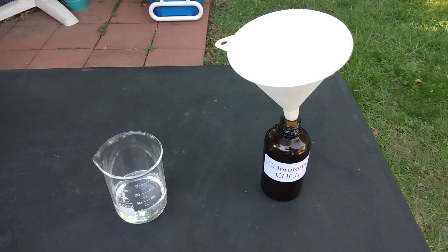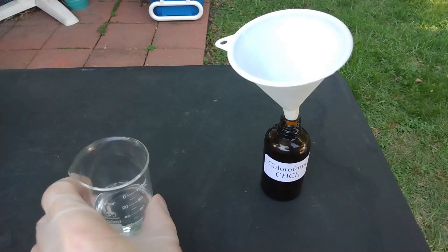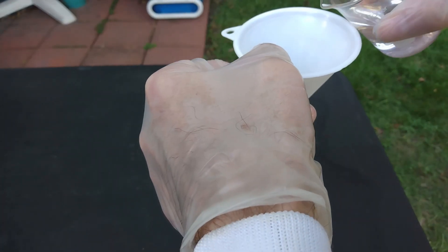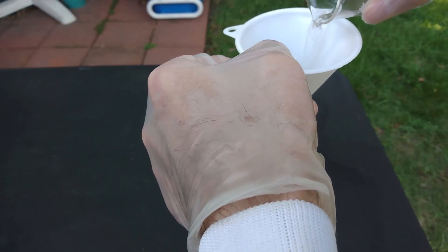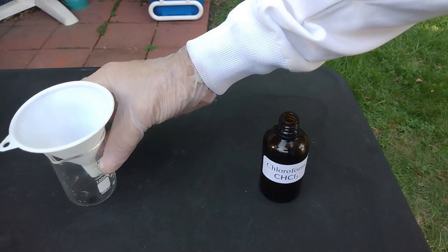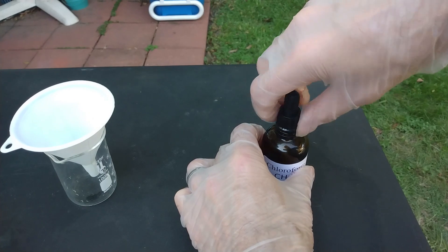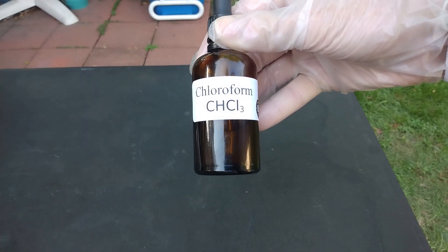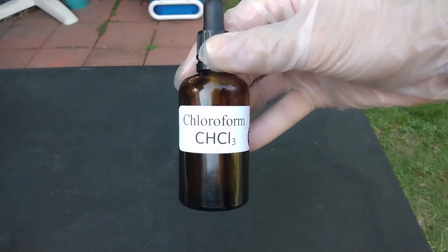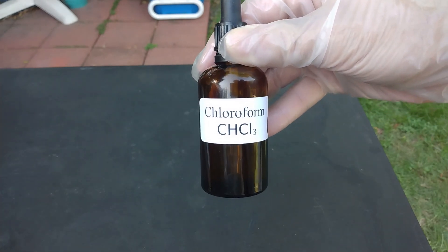And also, if I had added the acetone drop-wise to the bleach and keeping the temperature below 0 degrees Celsius, then the yield would have been greater. We made chloroform. If you don't plan on using it soon, it is recommended to add 1% of methanol, ethanol, or ethanol, in order to prevent the formation of phosgene gas.